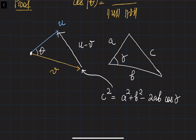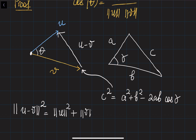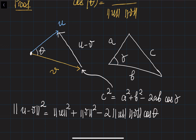We apply the same theorem to our triangle using u, v, and u − v. The norm of (u − v) squared equals the norm of u squared plus the norm of v squared minus 2 times the norm of u times the norm of v times cosine of theta. This rule always works because the subtraction of two vectors gives the white vector obtained by connecting the ending points.